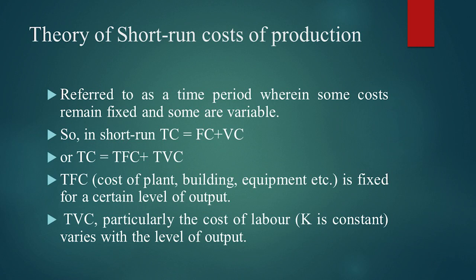Total fixed cost plus total variable cost equals total cost. TFC, or total fixed cost, is the cost of plant, building, and equipment — this is not going to be changed, so it is fixed cost. It is fixed for a certain level of output, but when the level of output increases, this fixed cost will also change and convert into another stage. TVC, total variable cost, particularly represents the cost of labor, because capital is constant. So total variable cost represents the cost of labor which varies with the level of output.